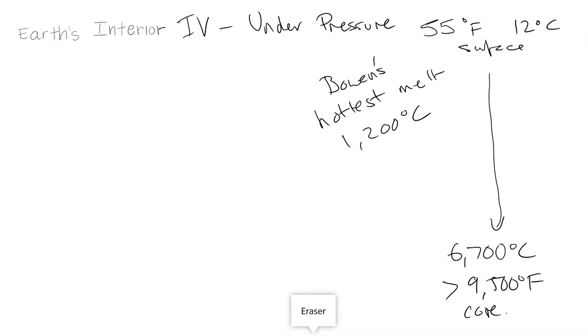Now, that temperature we reach just below the lithosphere. So at the bottom of the crust of the lithosphere, it's around 1,000 degrees Celsius. And then going into the asthenosphere,